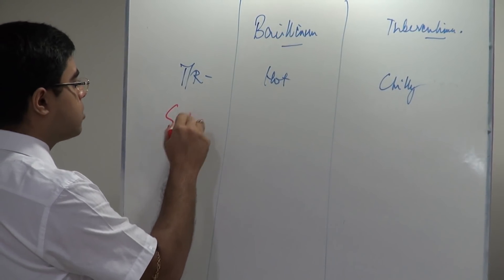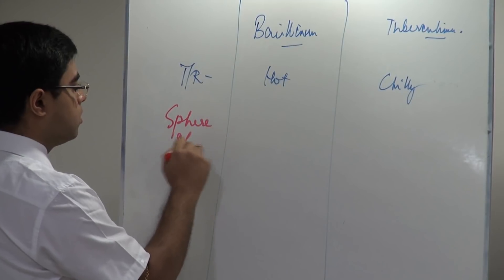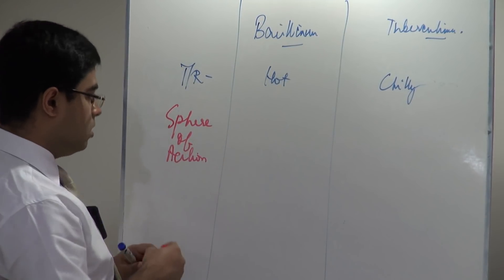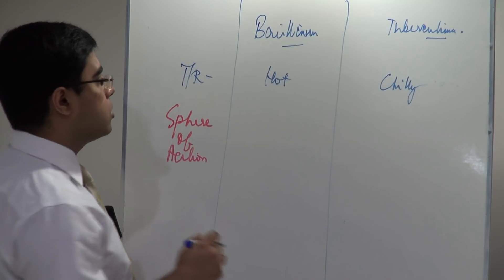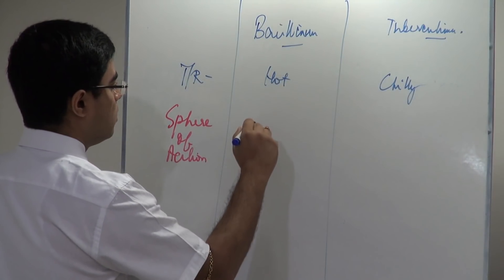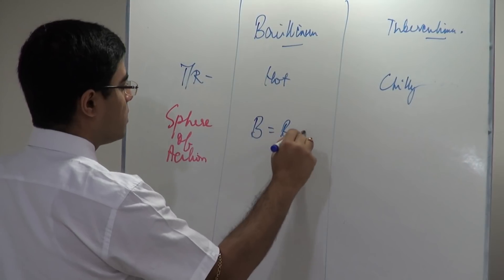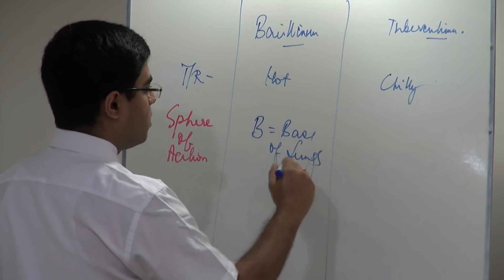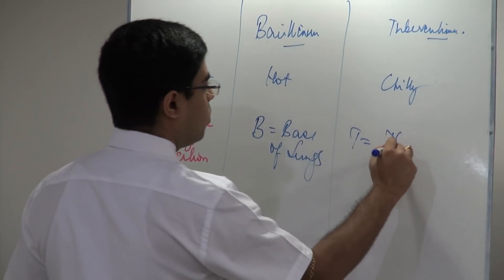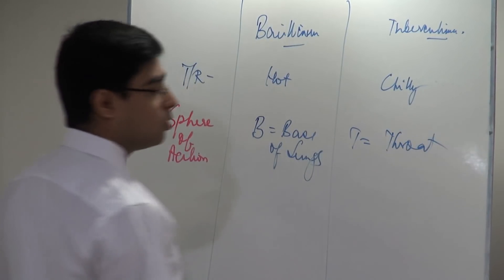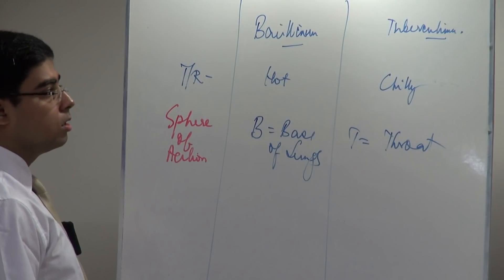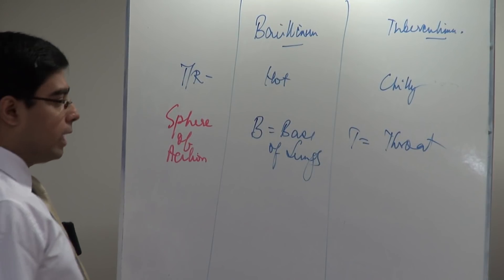If you think of sphere of action, Bacillinum's sphere of action — B for Bacillinum, B for base of the lungs — whereas T for Tuberculinum, T for throat is affected.